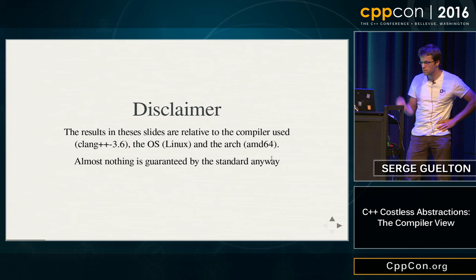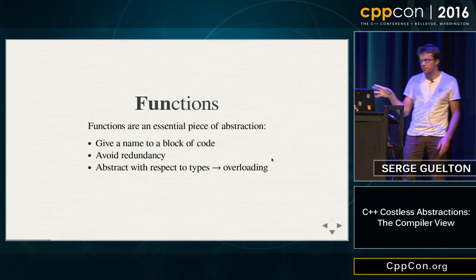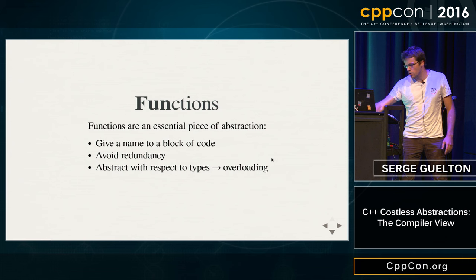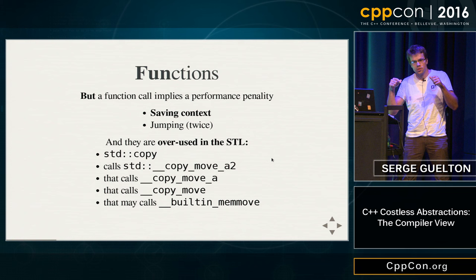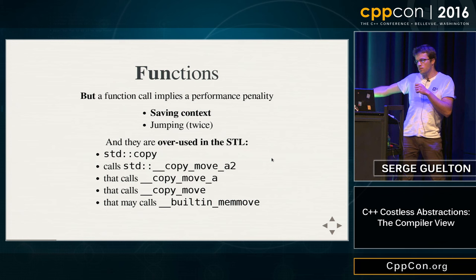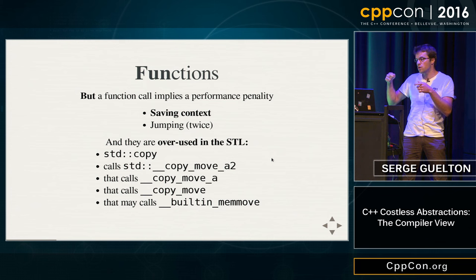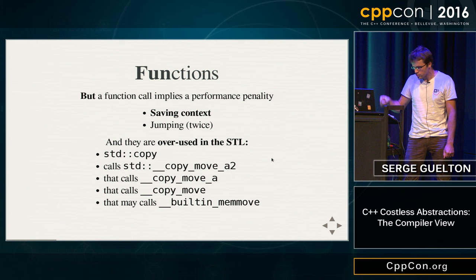First abstraction: functions. A very important piece of any code. They can be used for giving a name to a block of code, avoiding redundancy, and abstracting behavior with respect to types, thanks to overloading. But function calls have a price: you save all registers, jump to the function code, perform your stuff, then jump back and restore. This cost matters a lot in the STL. For example, when you do std::copy in the GNU STL, one possible call stack goes: copy → copy_move_a2 → copy_move_a → copy_move → and finally the built-in memmove, depending on the pointer type and size.